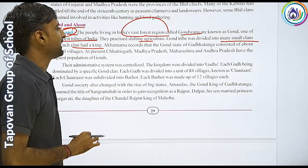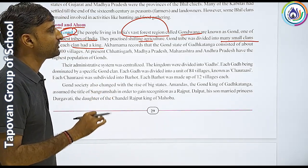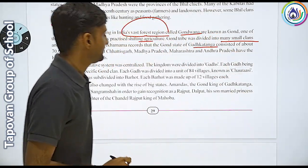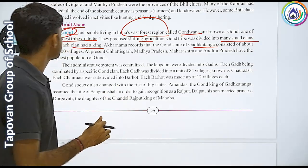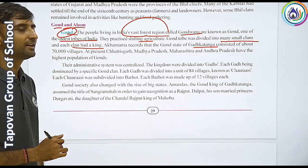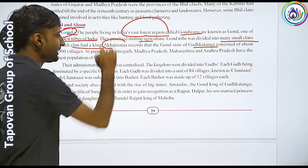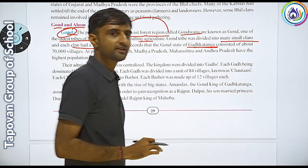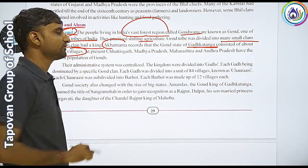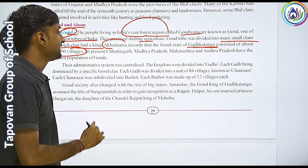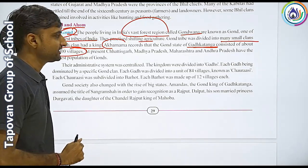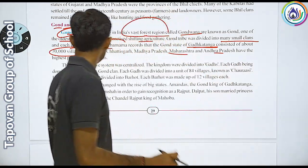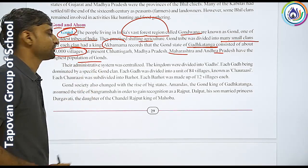Akbar Nama records that the Gond state of Gadhkanta consists of about 70,000 villages. At present, Chhattisgarh, Madhya Pradesh, Maharashtra and Arunachal Pradesh have the highest population of the Gonds.